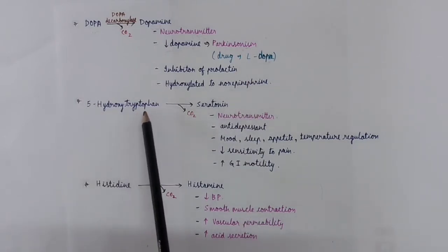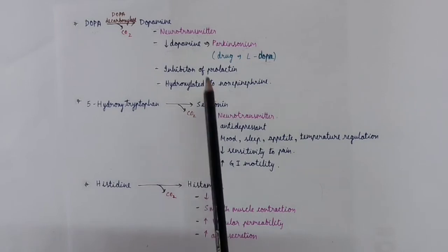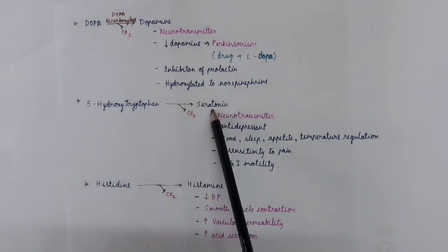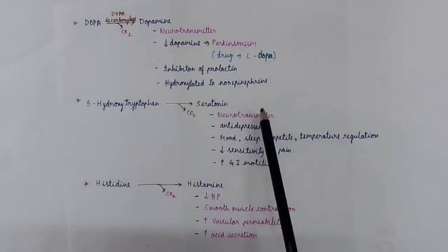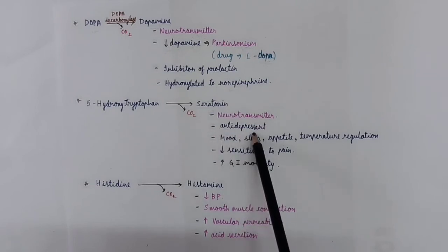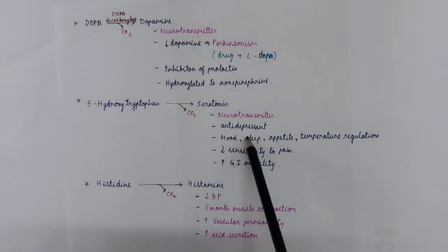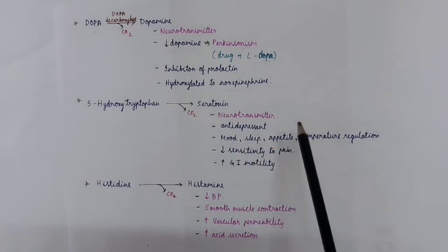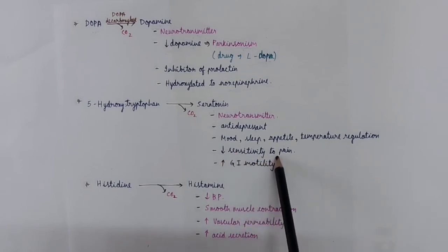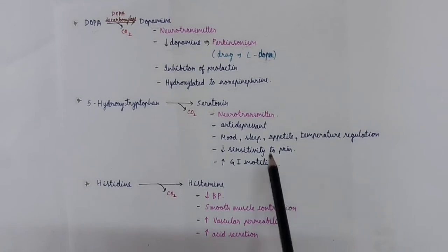5-hydroxytryptophan is converted to serotonin. Serotonin is also an important neurotransmitter. It acts as an antidepressant. It is involved in regulation of mood, sleep, appetite, temperature. Also, it increases the sensitivity to pain and increases GI motility.